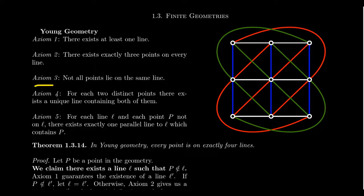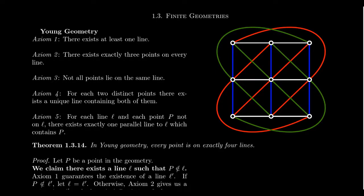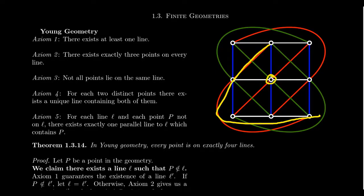Axiom 3: not all points lie on the same line, meaning given any line I can find a point not on it. For any horizontal, vertical, or slant line, there are points not on it. There are nine points in the geometry and every line has exactly three, so every line has six points not on it — we only need at least one. Axiom 4: for each two distinct points, there exists a unique line that contains both of them.